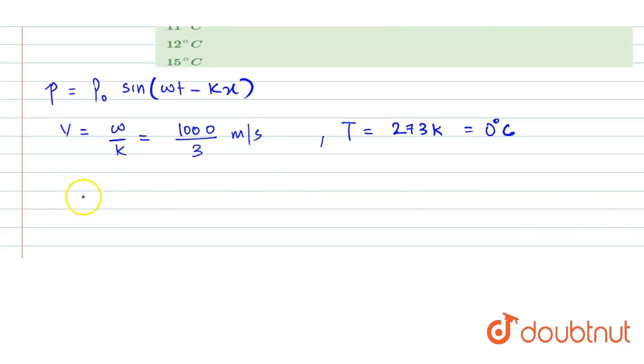Now we can use the relation speed of sound as under root γRT by M. If the atmosphere is same, that means γ will be same, R will be same, universal gas constant, and M which is the molecular mass will be same. So that means the speed of sound is directly proportional to root of the absolute temperature.